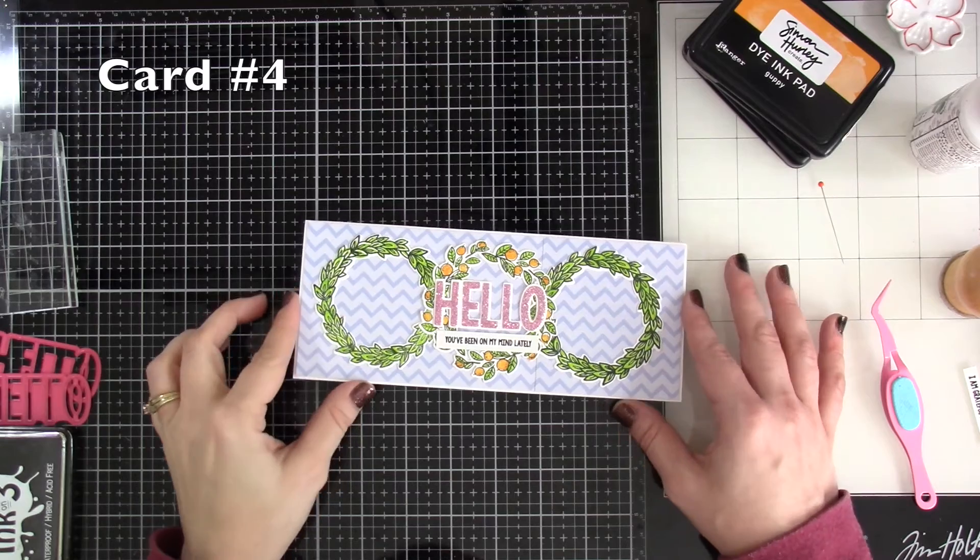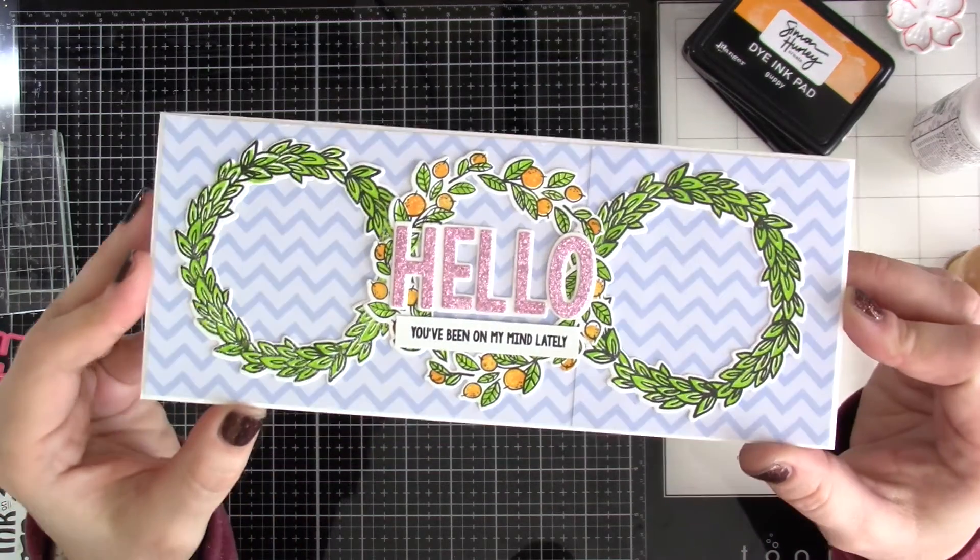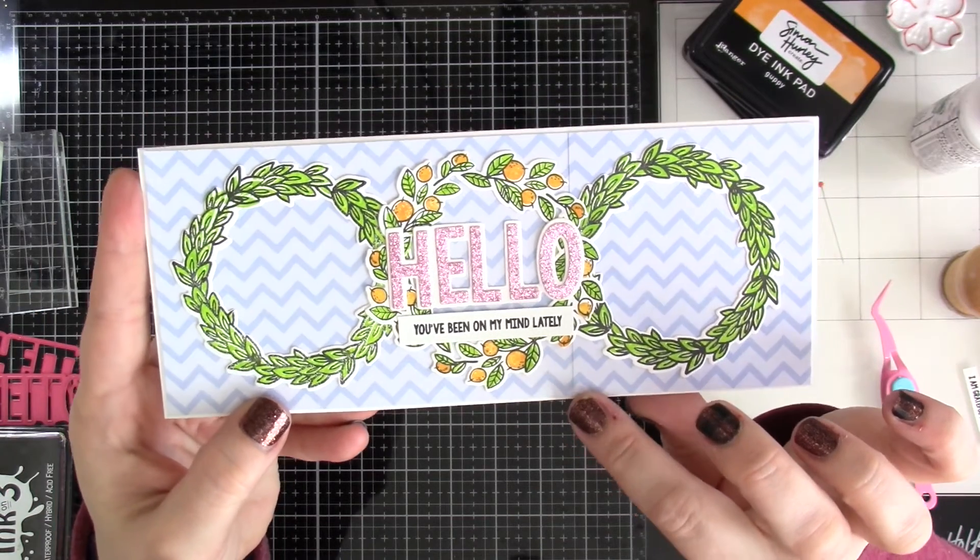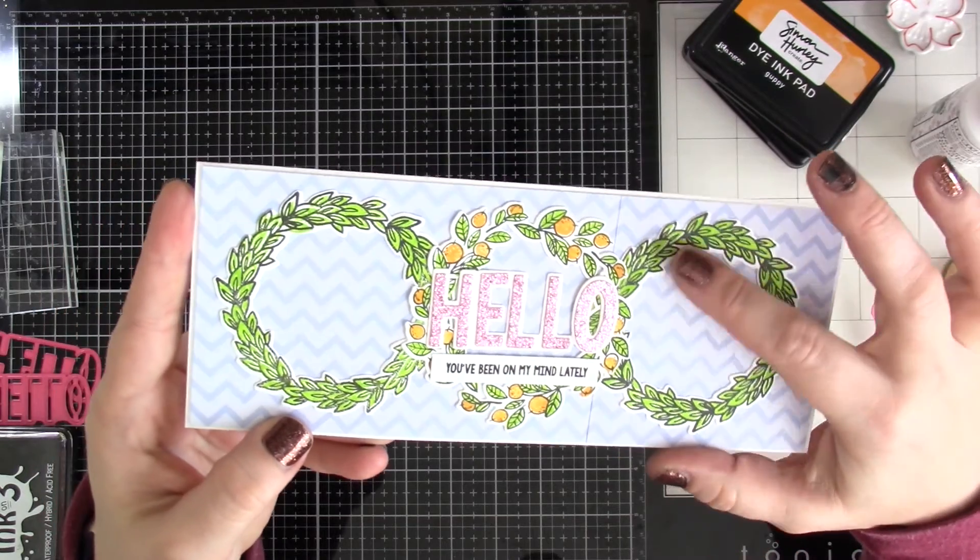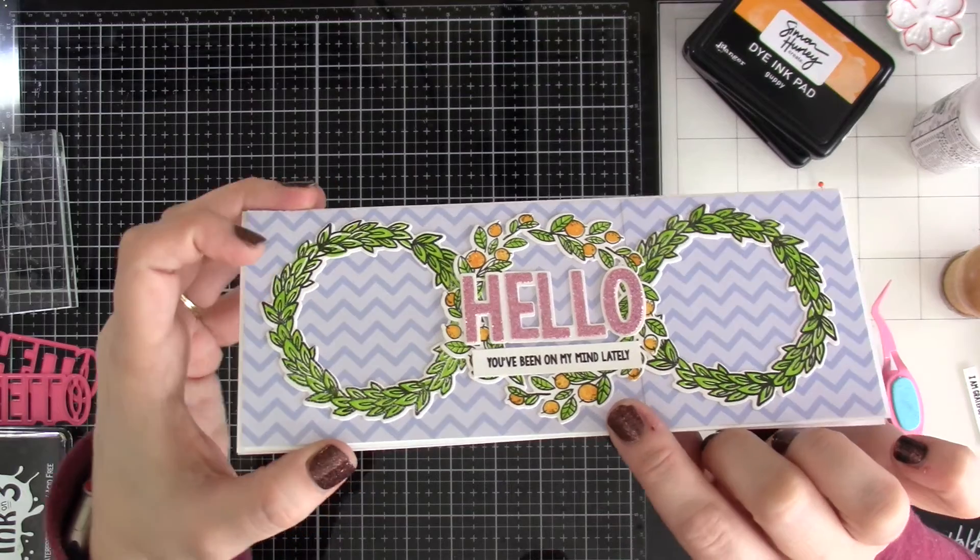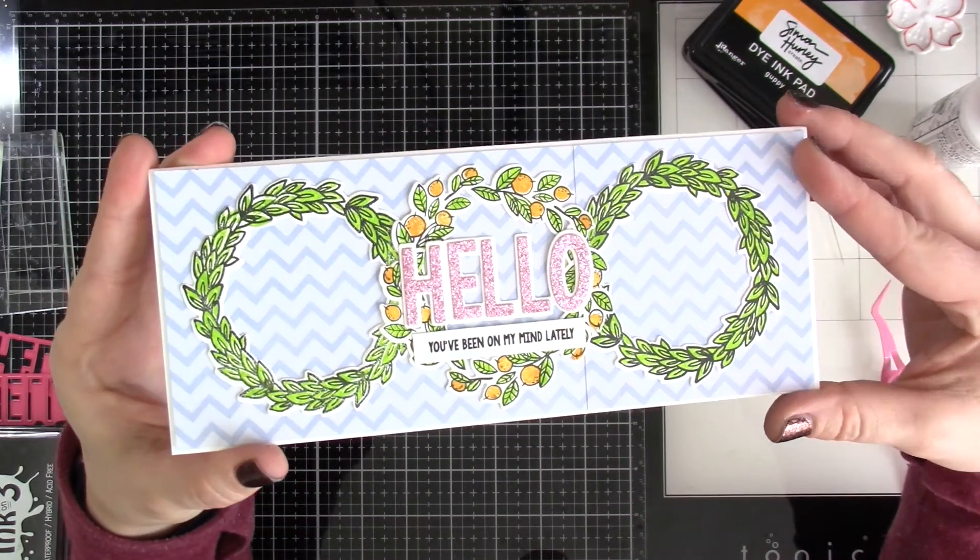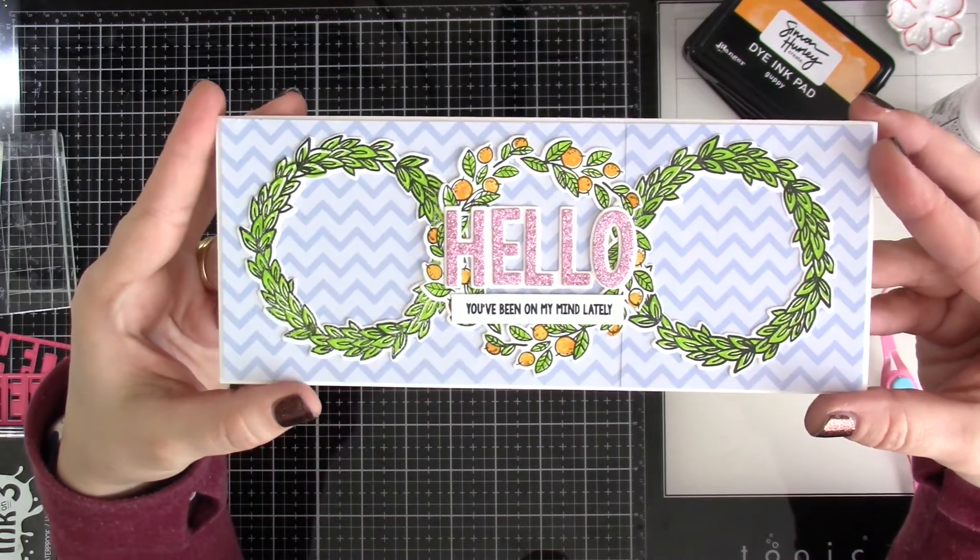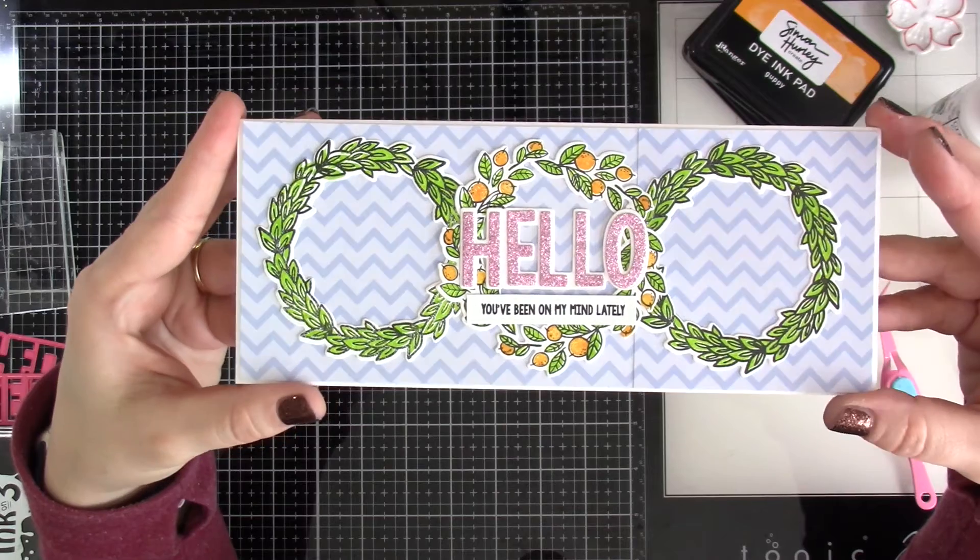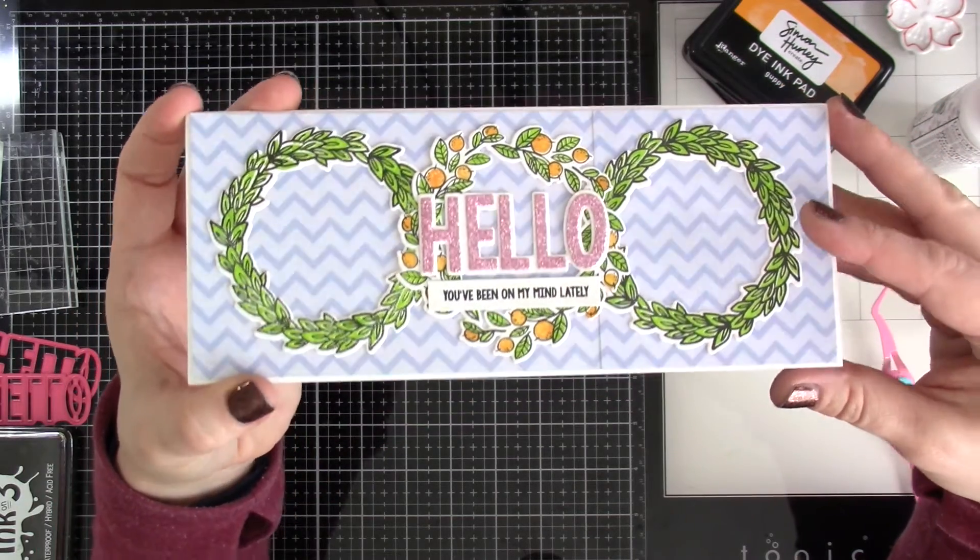Apparently I forgot to hit record when making card number four, so we'll talk through it. As you can see, I do have a little bit of a seam. I tried to take two pieces of the same pattern paper and line those up for a slimline card. I stamped and die cut out three wreaths, two of the green and one with the citrus. I die cut out the word hello out of the pink glitter cardstock that came in the kit. And then I used the shadow die cut in white and stamped out my sentiment on some more white and attach that down to the front of this slimline card base.